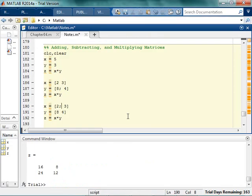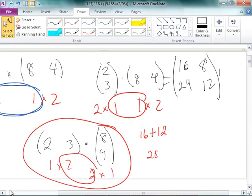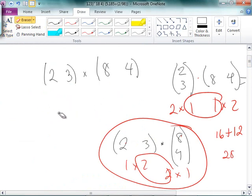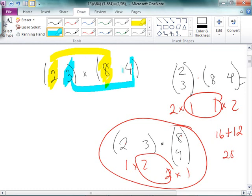But what if I really wanted what I thought I was typing in the first time? What I really wanted to do was I wanted to multiply 2 times 8, and then I wanted to multiply 3 times 4. I didn't want to do that weird actual linear algebra stuff. I just wanted to do straightforward multiply this one by this one and this one by this one. You can actually do that.